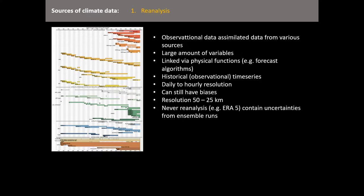Reanalysis data usually has a very high temporal resolution — the newer ones are hourly. They're still a bit coarse; the most modern one, ERA5, goes down to about 25 kilometer grid box size. They still have biases, so we're never 100% sure if they're fully accurate — for example, they can underestimate or overestimate rainfall because they cannot resolve convective precipitation, and there are errors in observations and satellite reflectance rates. Nevertheless, they're getting better over the years and are a very nice source for lots of parameters from the atmosphere or land surface.